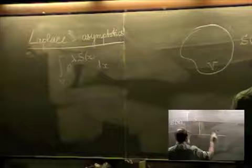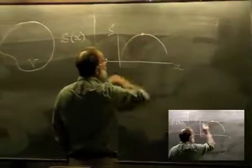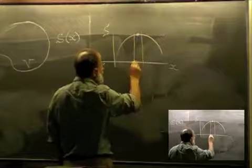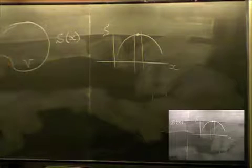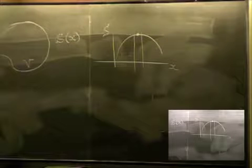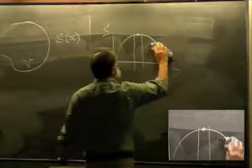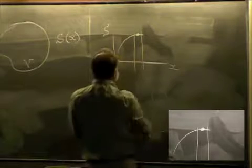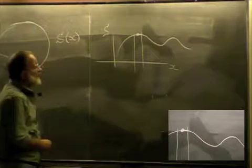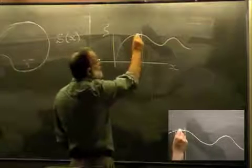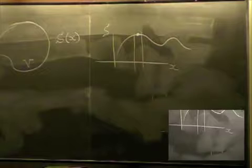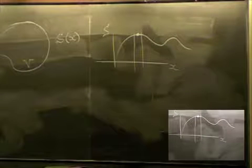In the one-dimensional case, if S(x) has a maximum, then to find the asymptotics we only need to consider the integral in the vicinity of that point of maximum. If the function has several maxima but only one attains the global maximum value, only that single point matters.